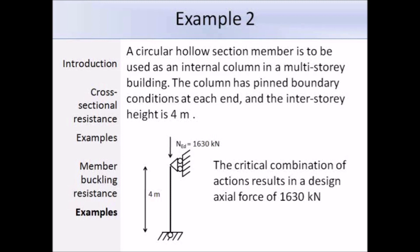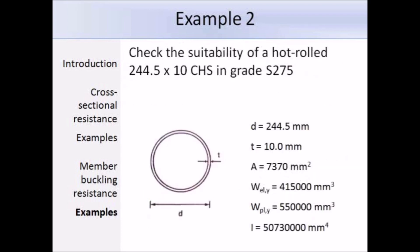This is Example 2. We have a circular hollow member which is 4 metres long and pinned at both ends. A design compression load NED of 1630 kN is applied. The section we're going to try is a 244.5 x 10 circular hollow section in grade S275 steel, and here are some of the section properties.